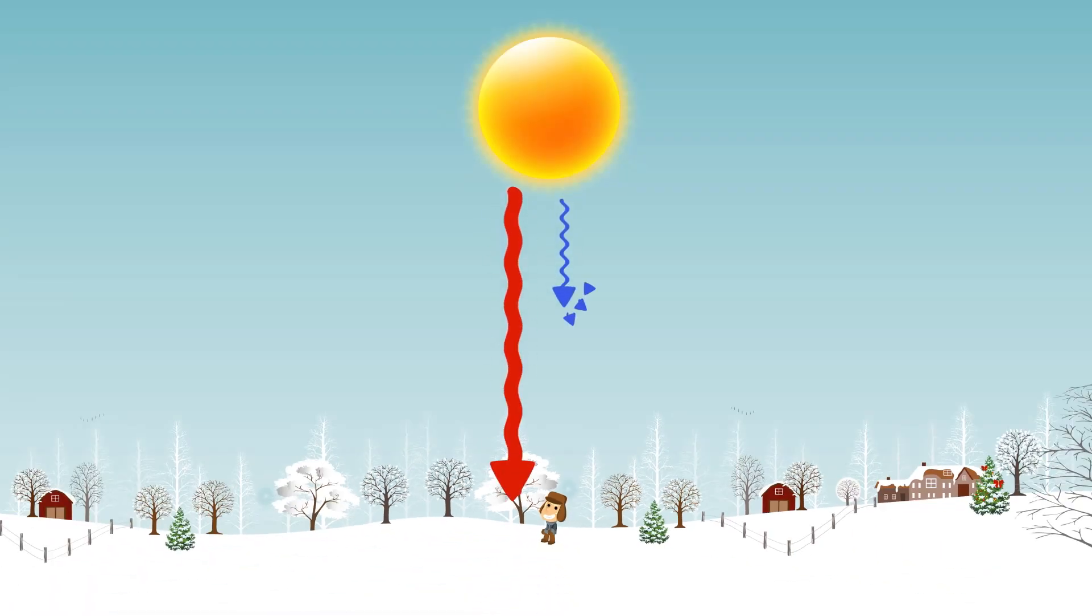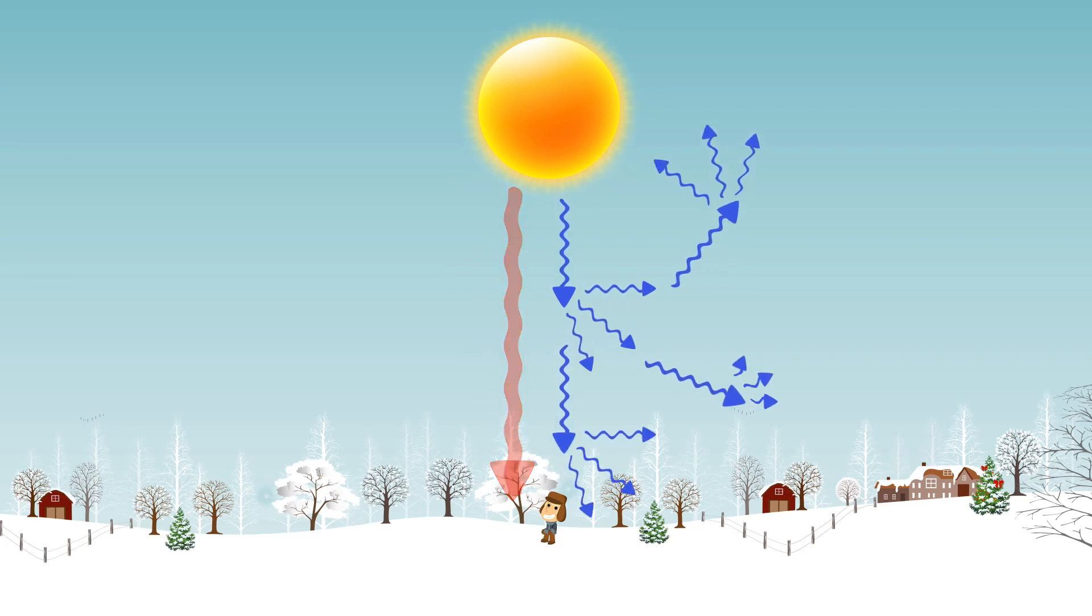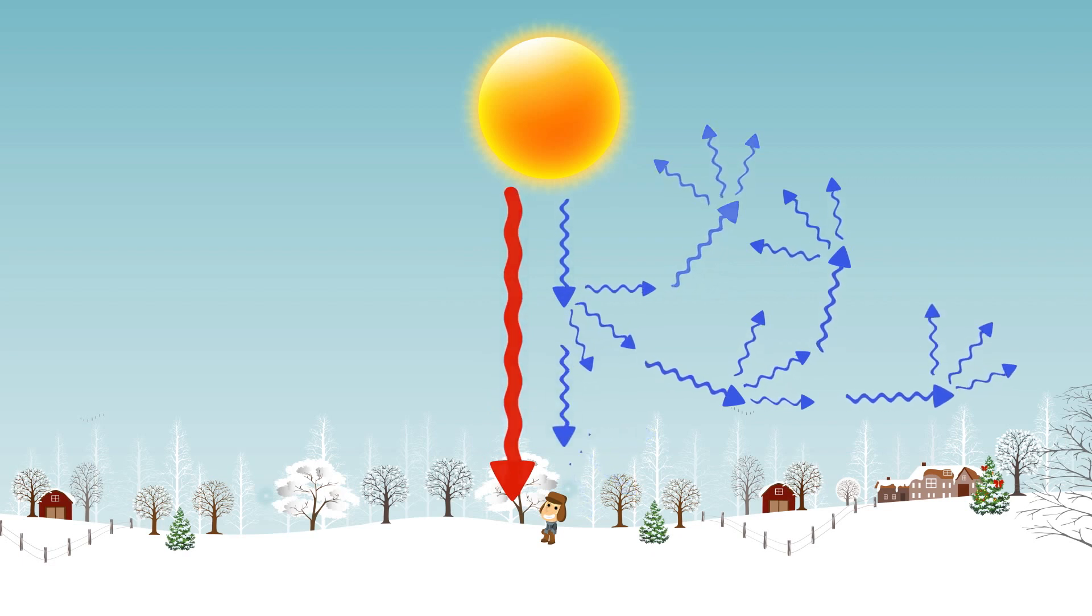When sunlight passes through those particles floating around in the air, the shorter light waves get scattered, while the longer waves pass right through.